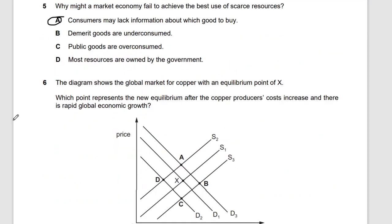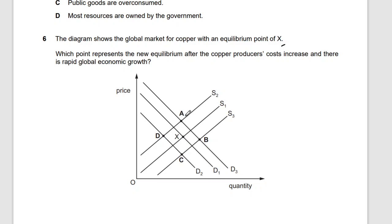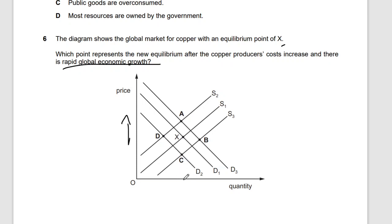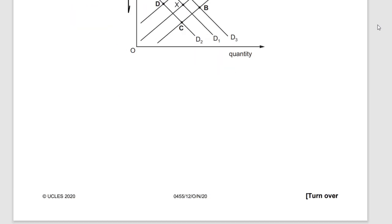Question six: the diagram shows the global market for copper with equilibrium point X. The equilibrium point is where the demand curve and supply curve meet. Copper producers' costs increase and there is rapid global economic growth — meaning the price increases. The answer is A.